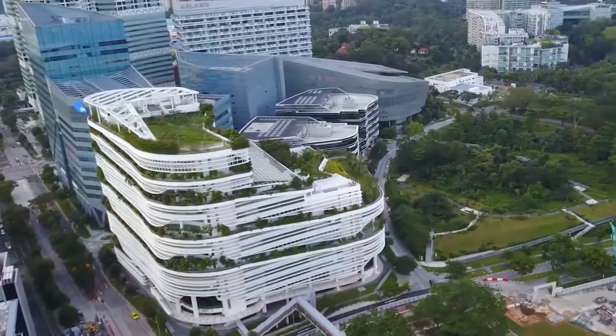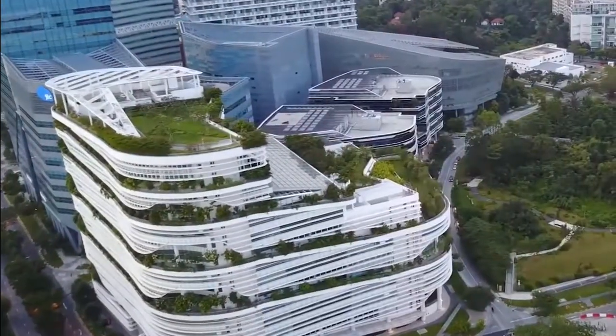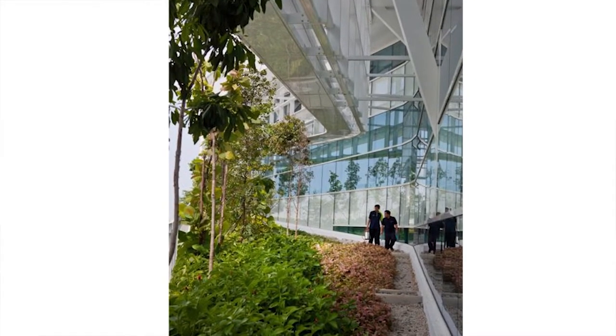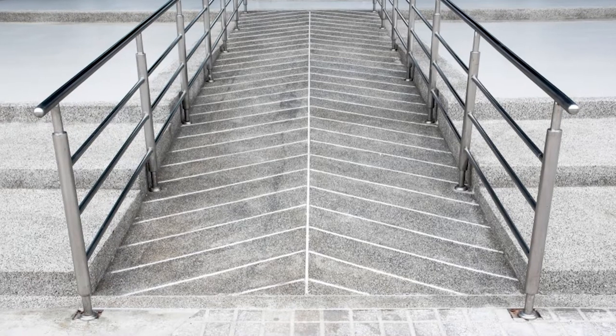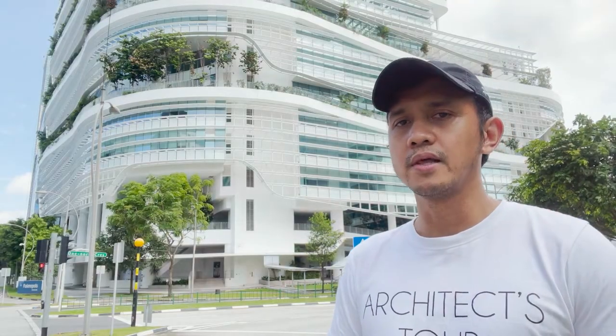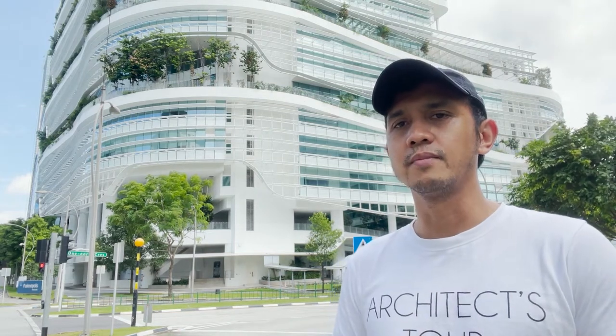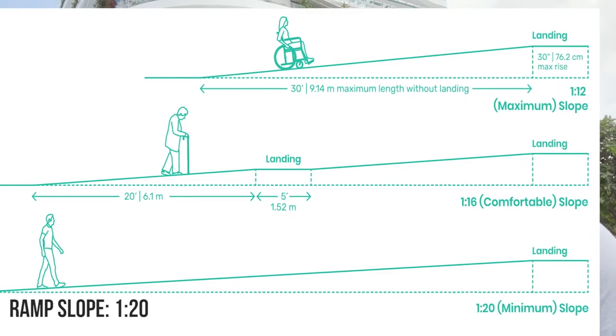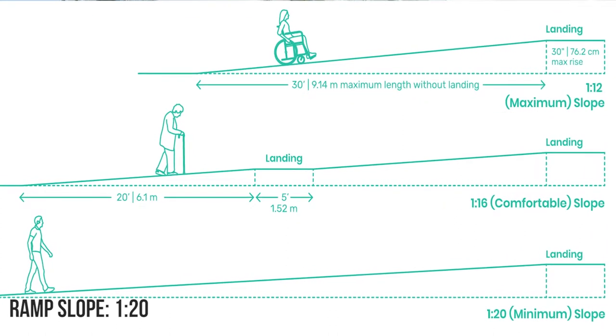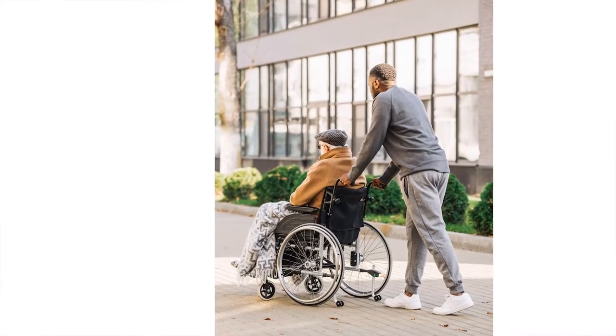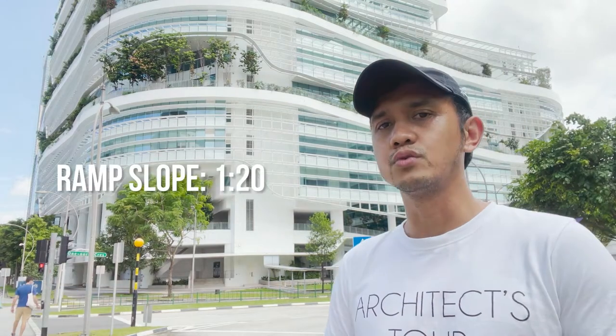This green ramp has some 3.0 meters width and the ramps are wide enough, unlike the typical ramps we see that are usually 1.0 meters or 1.2 meters in width. Having a total of 1.5 kilometers of green ramp, the RK students and designers used 1 is to 20 ramp slope for this building. That is what's considered safe for cyclists, joggers, and wheelchair users. Always consider 1 is to 20 ramp slope.